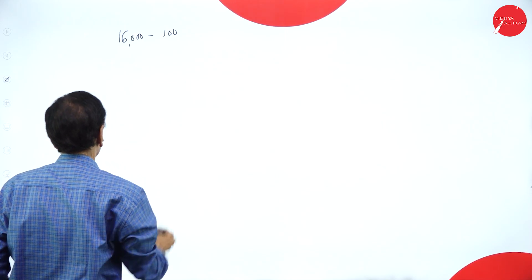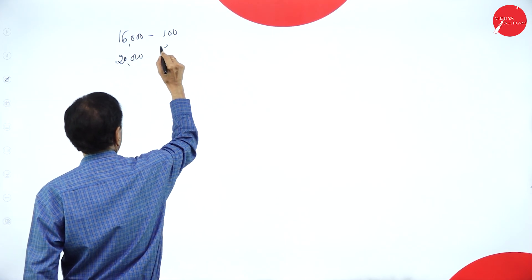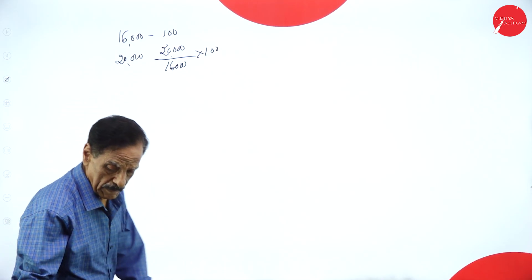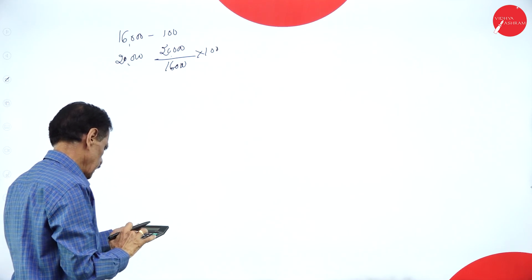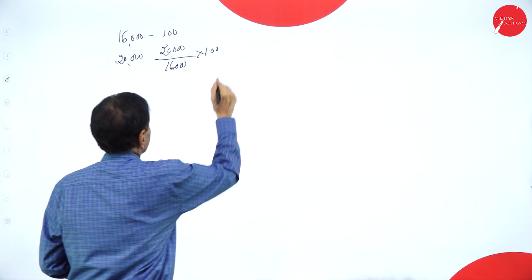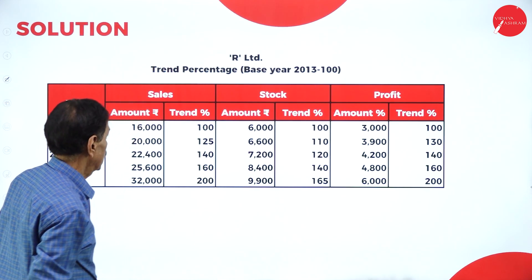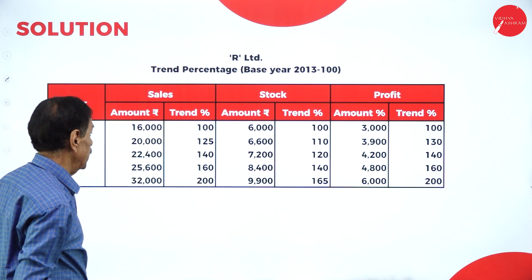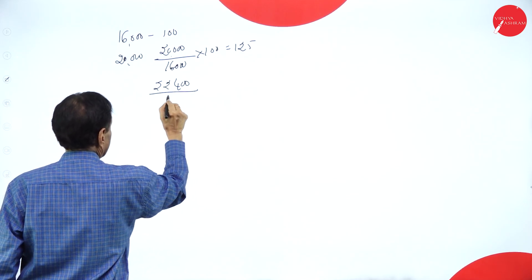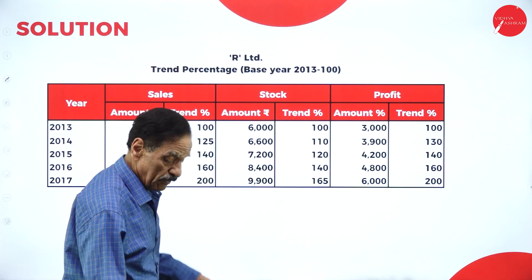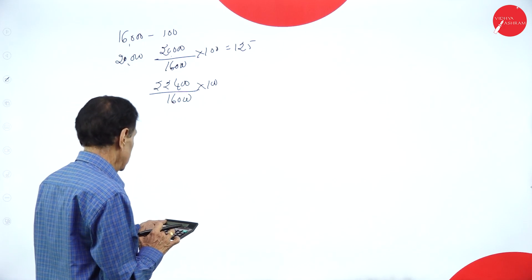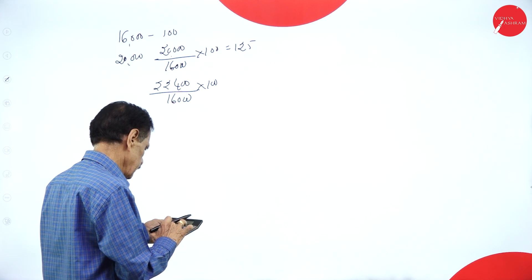To find the trend for 20,000: 20,000 divided by 16,000 into 100 equals 125. For 22,400 divided by 16,000 into 100, it comes to 140.